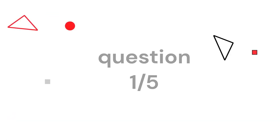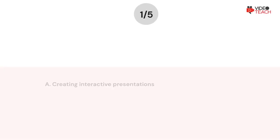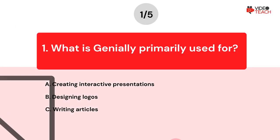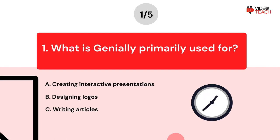Question number one. What is Genially primarily used for? Option A: Creating interactive presentations. Option B: Designing logos. Option C: Writing articles. Now you have about 15 seconds to think about your answer.